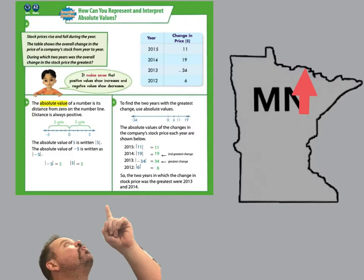Now you're probably asking yourself, what does a number line have to do with our new topic, absolute value? Absolute value is the distance from zero on a number line, and distance is always positive. So if I'm finding the absolute value of negative five, the distance would be five spaces to zero. And if I'm at positive five, it is still five units away from zero. So absolute value is always positive because distance is always positive.